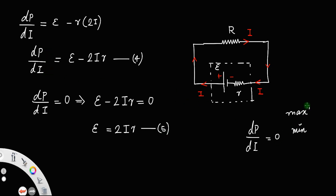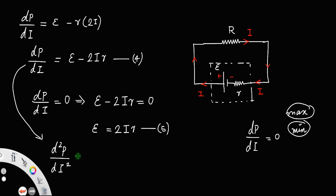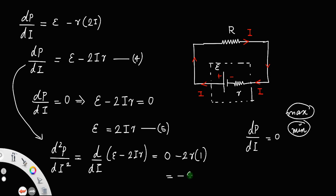To check whether this is a maximum or minimum, we find the second derivative d²P/dI². Differentiating E − 2Ir again: the derivative of E is 0 and 2r is constant, so d²P/dI² = −2r. Since resistance cannot be negative, −2r is less than 0. When d²P/dI² < 0, the power is maximum — this is the second derivative test.